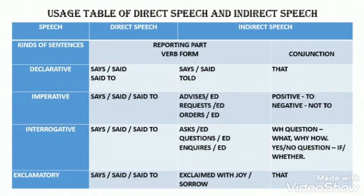Next, the usage table of direct speech and indirect speech. We have seen the rules to change direct speech into indirect speech. Now we are going to see the usage table. There are four kinds of sentences: declarative, imperative, interrogative, and exclamatory. The usage of direct and indirect speech will differ according to the type of sentence.